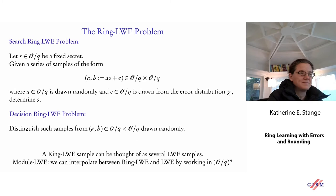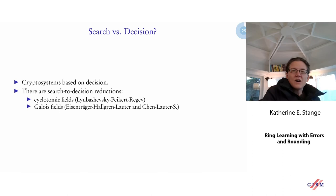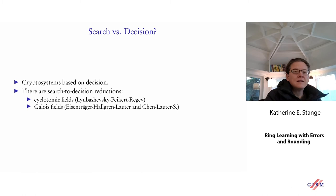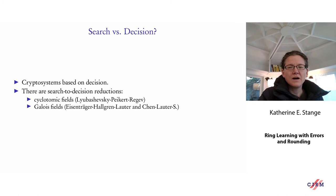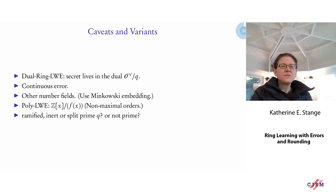Plenty of cryptography is based on the decision version for its security, and there are search-to-decision reductions. The main proposal uses cyclotomic fields, specifically power-of-two cyclotomic fields, where the search-to-decision reduction was proved first, but it can be extended to Galois fields — so you could try to attack either version in most cases.